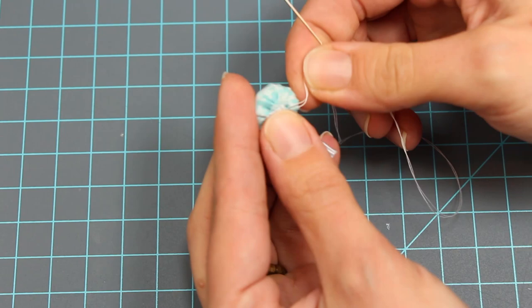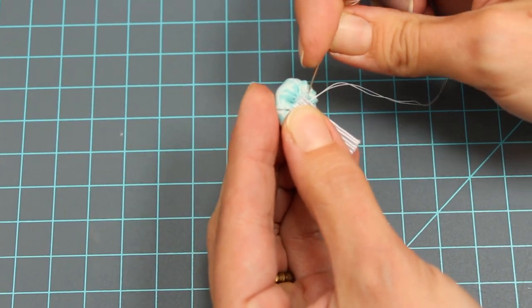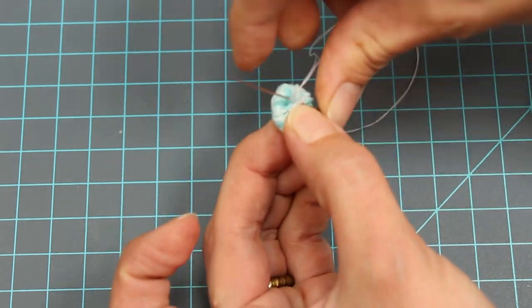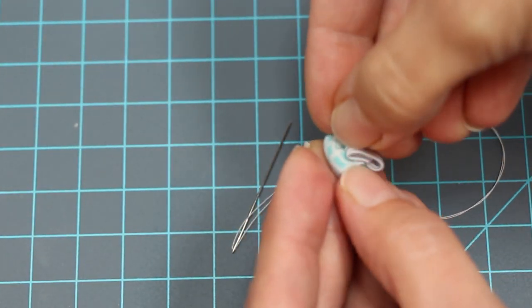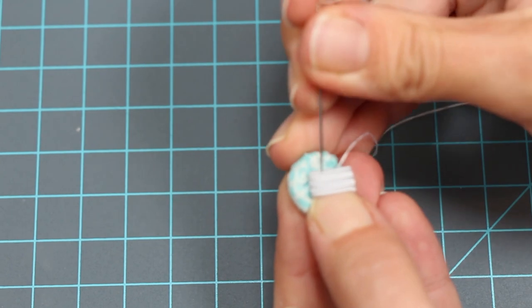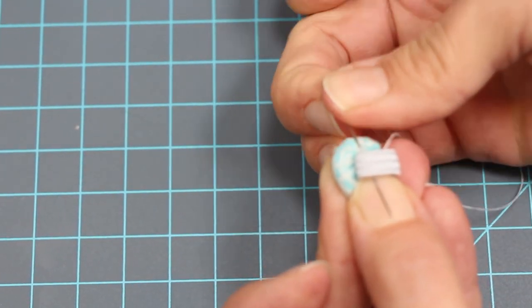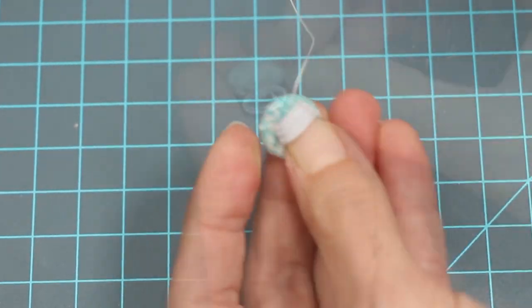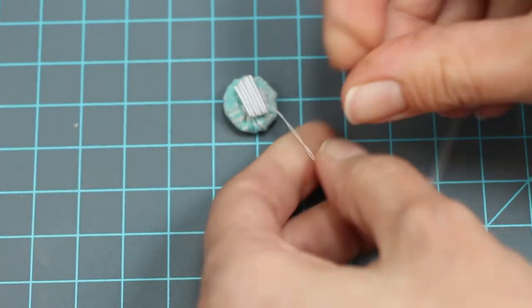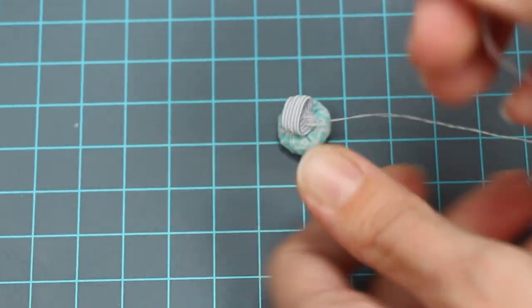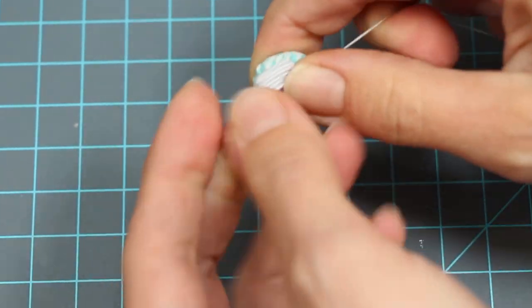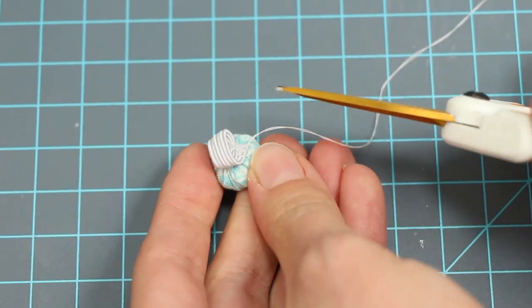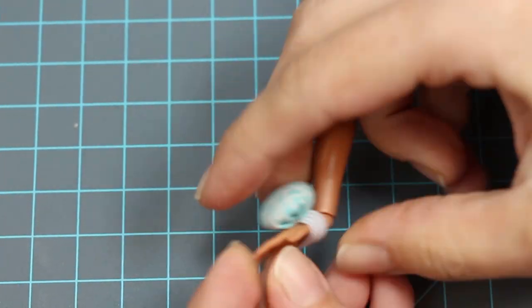Make a few more stitches to hold it tight. Cut a piece of quarter-inch elastic that fits around your doll's wrist. Sew one side down and then the other, then knot your thread. Tie it on your doll's wrist.